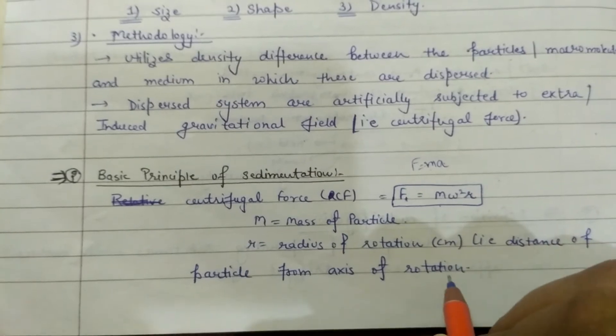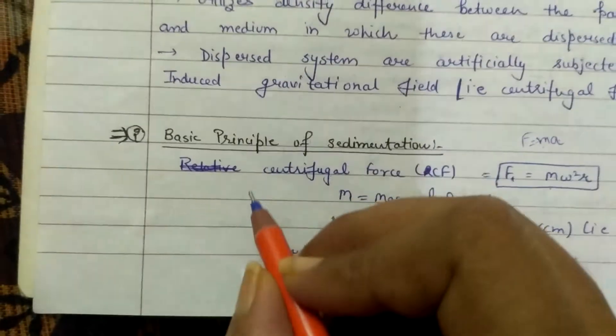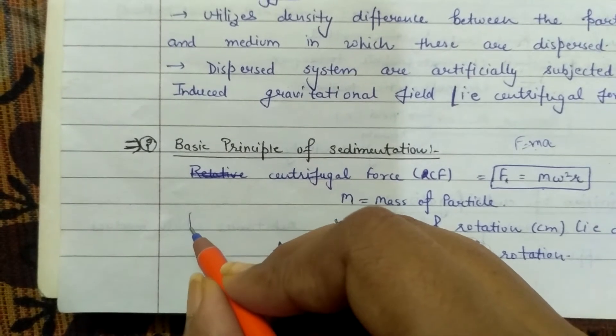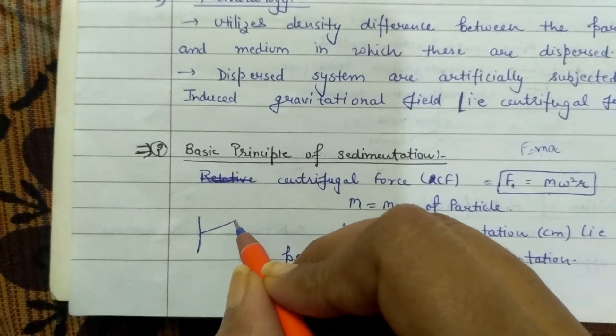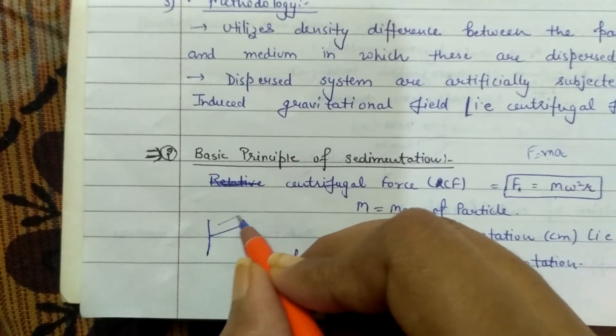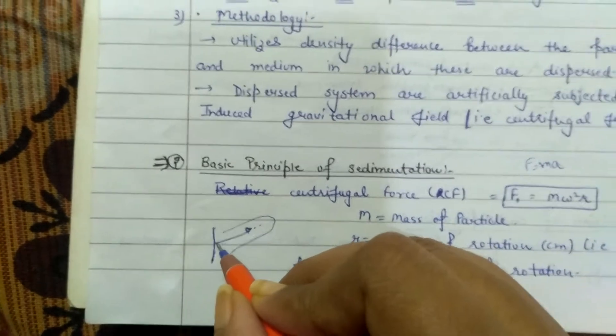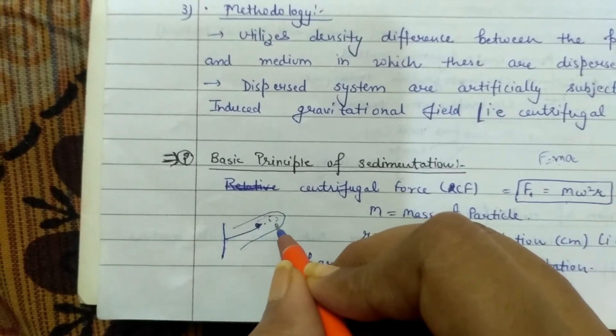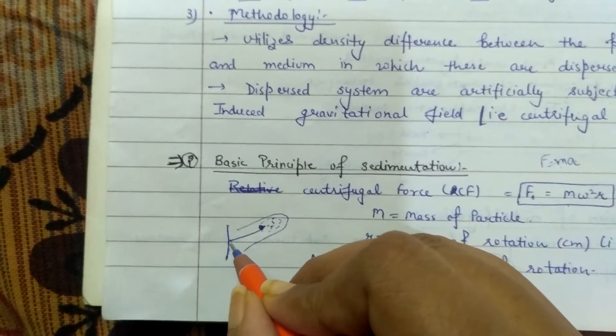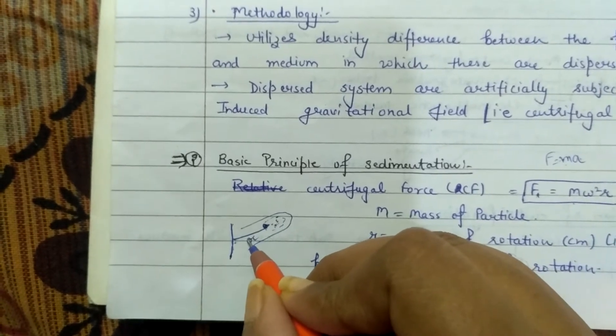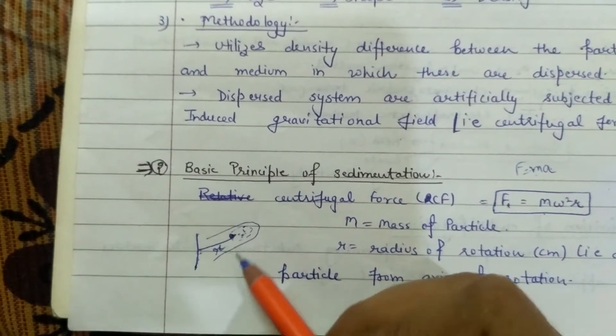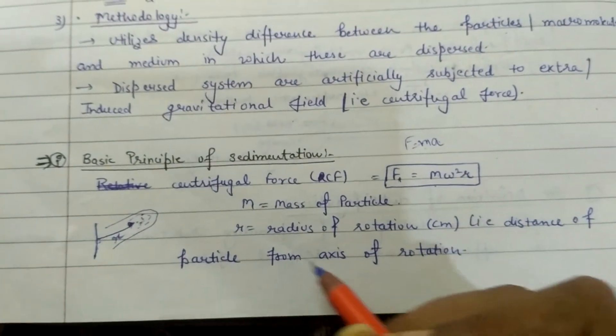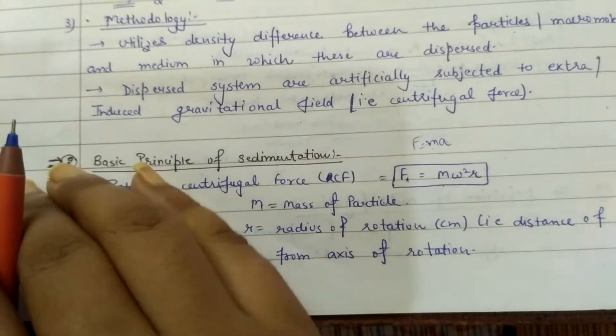R is the radius of rotation, that is, the distance of the particle from the axis of rotation. In a centrifuge, you have an axis with blades placed at the end where you keep the tubes. This distance from the axis is r, the radius of rotation.